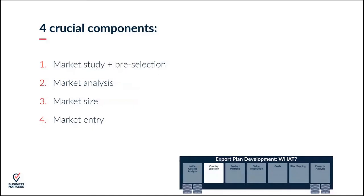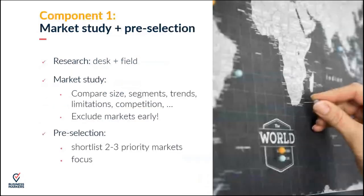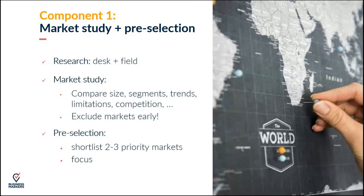To select a country, there are four crucial components. First is the general market study — based on that, you do a pre-selection of priority countries. For those, you make a detailed market analysis, determine the size of the market, and decide how you will enter the market. You can do desk research using free information sources like chambers of commerce, sector organisations, and banks. Field research is also possible, even digitally — use LinkedIn or look into local bloggers to see what's cooking in a certain market.